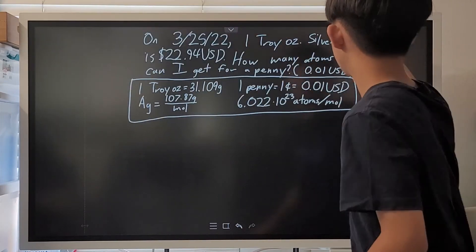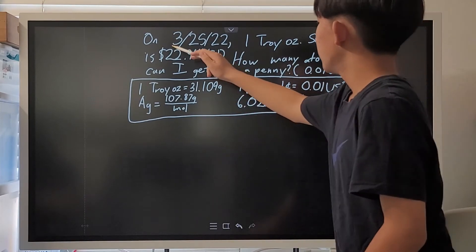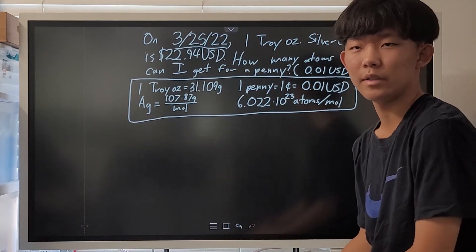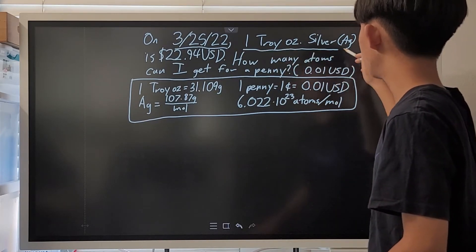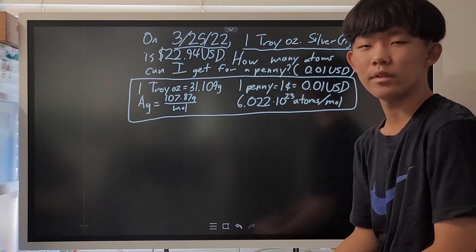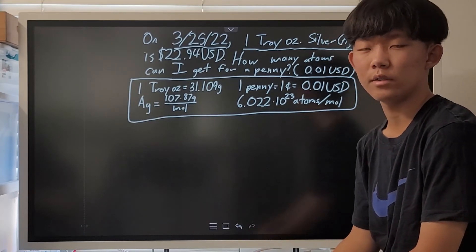And now, let's try something that's a bit longer. On March 25th, 2022, which also happens to be the date that this video was filmed, 1 troy ounce of silver, AG, had cost $22.94 USD.